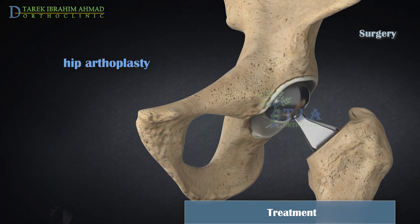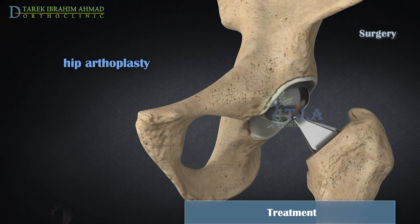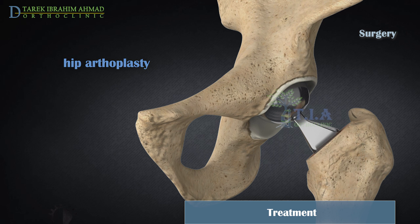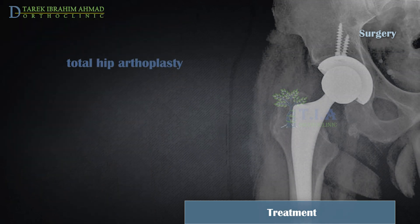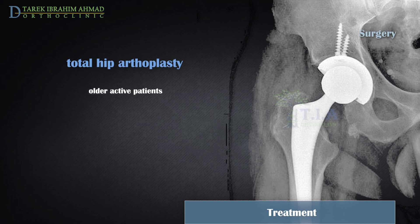Hip arthroplasty is indicated for severe unstable fractures, failed fracture fixation surgery, or osteoporotic bone that is unlikely to hold internal fixation. During hip arthroplasty, a section or all of the hip joint is replaced with artificial components. In partial hip arthroplasty, the surgeon replaces only the broken upper portion of the femur. In total hip arthroplasty, both the broken upper part and the hip socket are replaced.